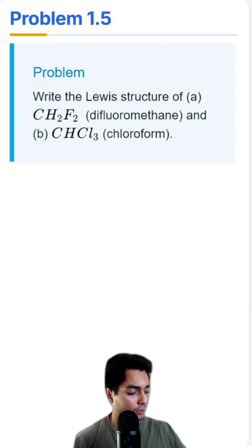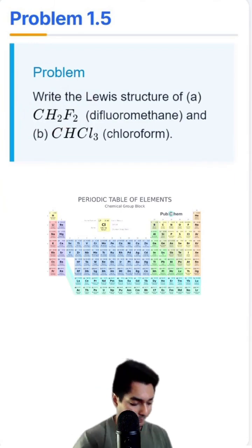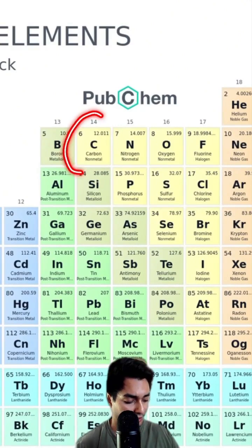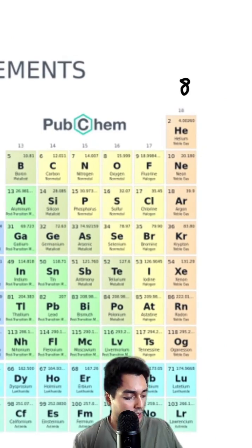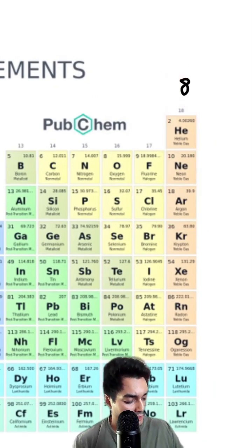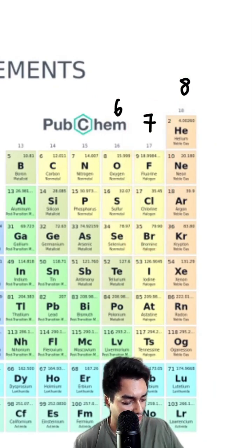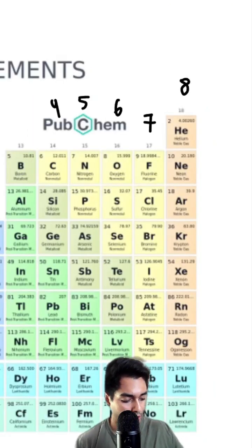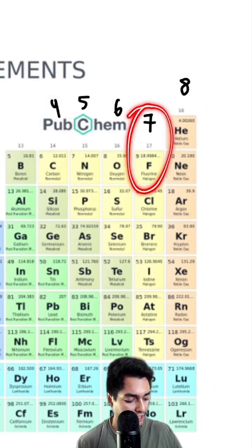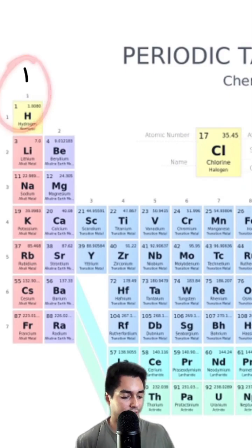This is where it's really important to be confident with the periodic table. Let's take a look at CH2F2 and see where these elements live. Carbon lives right over here. Remember the trick: we put an 8 to indicate that everything in that column has 8 valence electrons, a 7 for the next column, then 6, 5, 4. Carbon lives in the column with a 4, so carbon has 4 valence electrons. Fluorine has 7, and hydrogen has 1 valence electron.